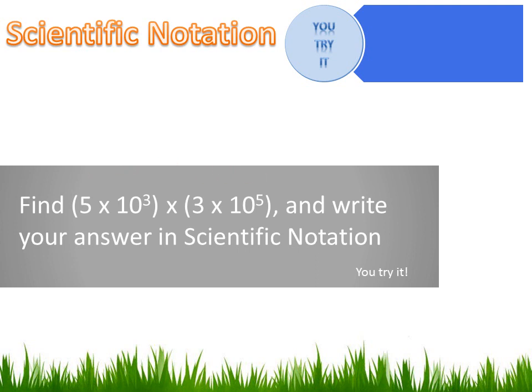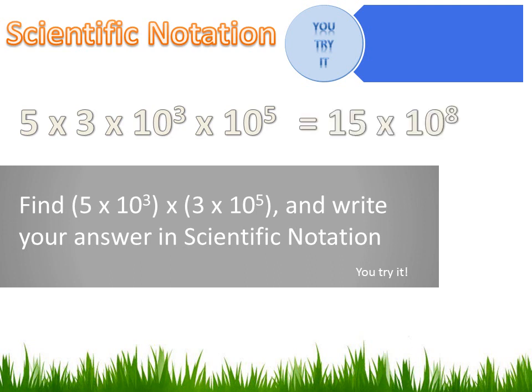Well, if I want to multiply two terms that are listed in scientific notation, the first thing I want to do is regroup them. I want to put my like terms together. My 3 and my 5 and my 10 to the third and my 10 to the fifth. So, I'm going to regroup it and it's going to read 5 times 3 times 10 to the third times 10 to the fifth. Now, I need to multiply my like terms together. 5 times 3 is 15 and 10 to the third times 10 to the fifth is 10 to the eighth.